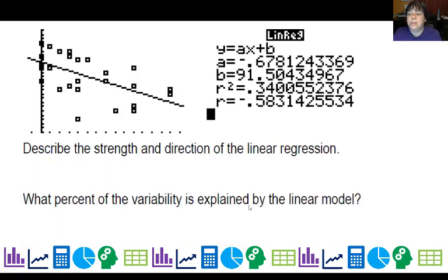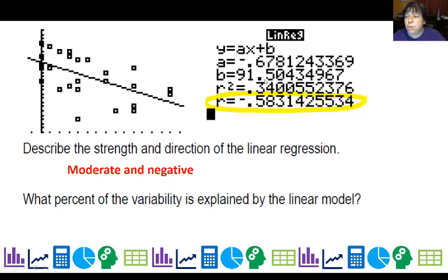Describe the strength and direction of the linear regression. Well, in this case, the direction is obviously negative. My correlation coefficient is negative 0.58. Well, between 0.5 and 0.8, or negative 0.5 and negative 0.8, we consider that moderate strength. And it's definitely negative. What percent of the variability is explained by the linear model? Well, r squared is 0.34, so 34% of the variability is explained.